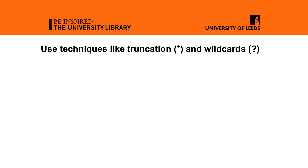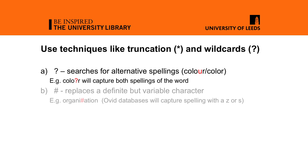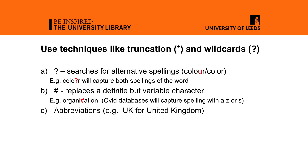To improve your search, you can use techniques such as truncation and wildcards. You can use the question mark to search for words which may or may not have a certain letter in them. For example, using the question mark in place of the U in colour allows us to search for the American spelling as well as the British one. The hash symbol replaces a definite but variable character. Using it in the word organisation allows us to find it spelled with an S or a Z. Make sure you include abbreviations, for example UK and United Kingdom.